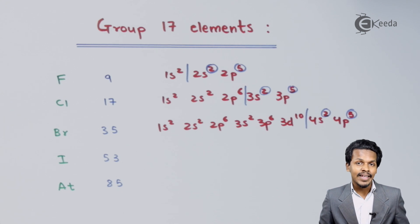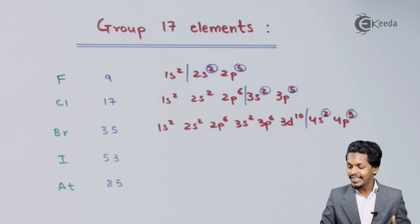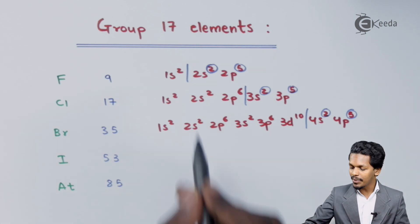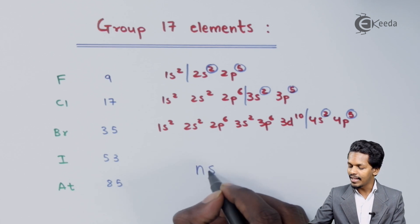This defines that these are p-block elements in which there are 5 electrons in the p-subshell, and that is what we name the halogen family. We can give the general electronic configuration for the valence shell as ns² np⁵.